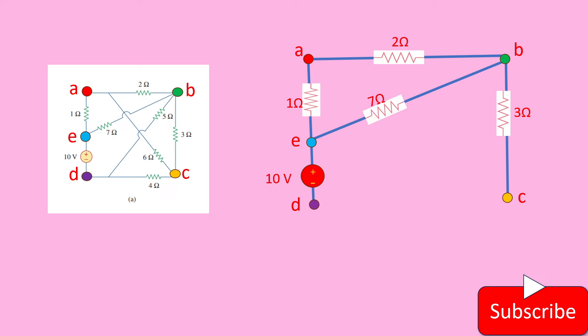Then between B and E, we have the 7 ohm resistance. And between this C and D, we have 4 ohm resistance. Between B and D, we have this 5 ohm resistance.